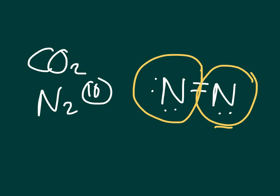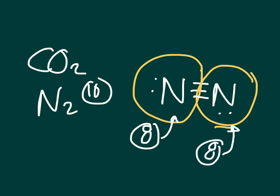I do it one more time — erase another lone pair and make a triple bond. Now I have eight electrons around each nitrogen, using only ten electrons total. Counting them individually: one through ten — it works. This is the correct Lewis dot structure for N2, a triple bond. Make sure you copied all of that down. If you have any questions, feel free to bring them tomorrow. That's our introduction to Lewis dot structures.